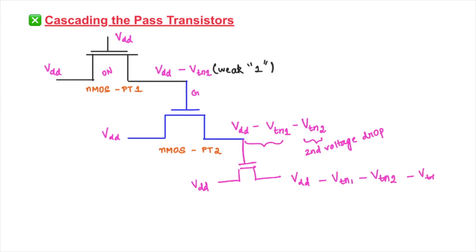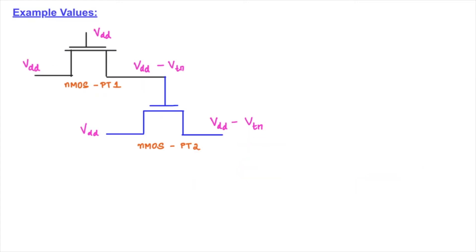With more transistors cascaded, the voltage drop keeps continuing — that is why this is not the proper way of cascading pass transistors. This can be understood better with specific voltage values, because in the GATE problem specific voltages are given: 5 volts supply and a threshold voltage drop of 1 volt. We will understand the cascading problem with specific voltage values first, then move on to the correct approach.